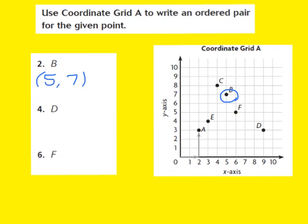My next step is to locate point D. I come to my coordinate grid, locate point D right here, and circle it. Starting from the origin, 0, 0, I move along the x-axis first: 1, 2, 3, 4, 5, 6, 7, 8, 9. I stop at 9 because D is located at 9 on the x-axis. So I write down 9 as my x-coordinate.